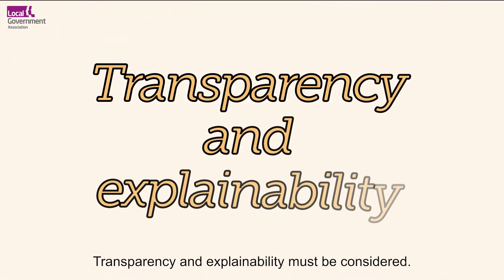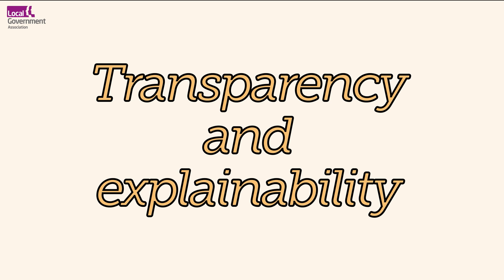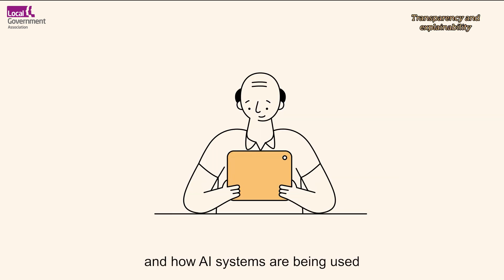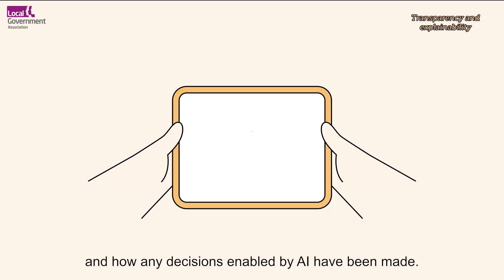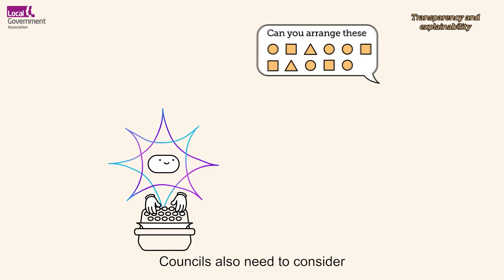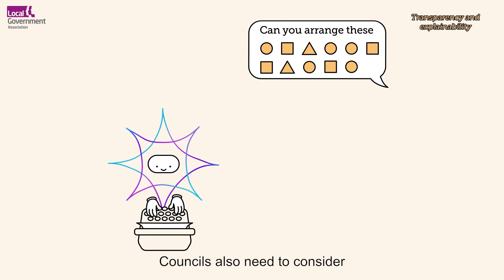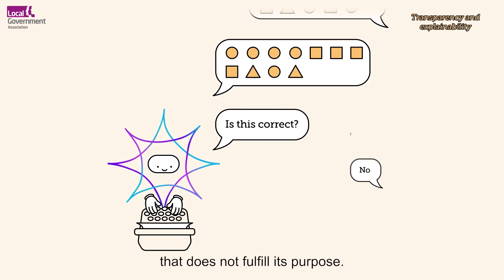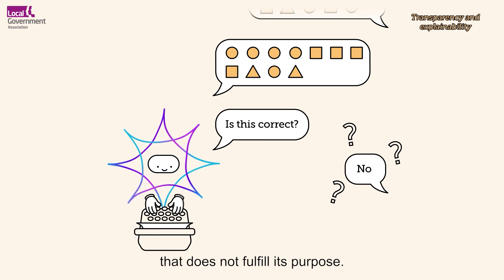Transparency and explainability must be considered. Councils must be transparent with staff and residents about when and how AI systems are being used, and how any decisions enabled by AI have been made. Councils also need to consider what will need to be done if an AI system creates an output or process that does not fulfil its purpose.